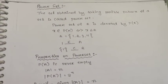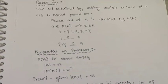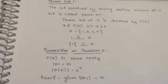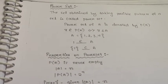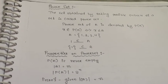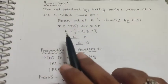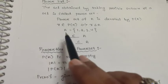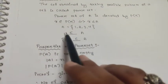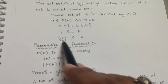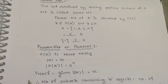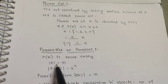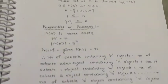The set obtained by taking all possible subsets of a set is called the power set. The power set of A is denoted by P(A). The power set of A is never empty. If the cardinality of A equals n, then the cardinality of the power set of A equals 2 to the power n.